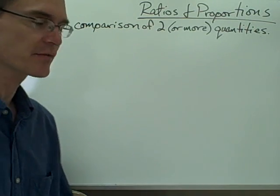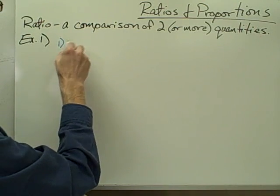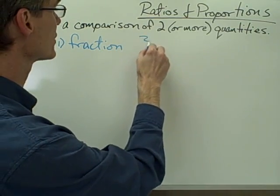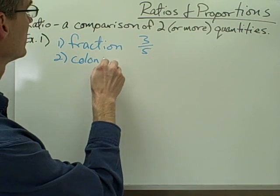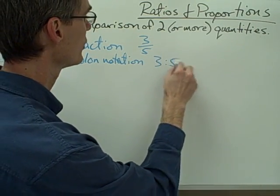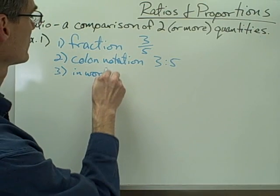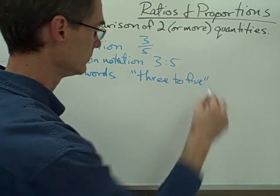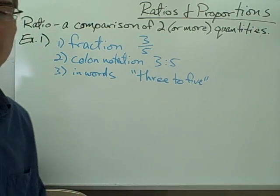Our first example says three gallons of gas for five lawnmowers. Three and five are the two quantities we are comparing. The first way is using a fraction, written as three over five. The second way is using colon notation: three colon five, read as three to five. The third way is just in words: three to five. These are the three ways of expressing a ratio. Fraction notation is probably the most commonly used, but the other two you will see as well.